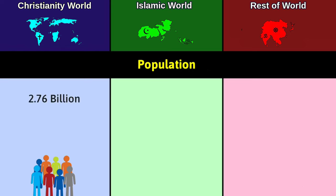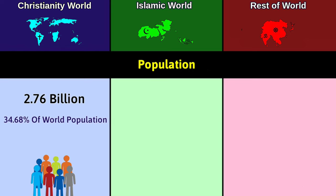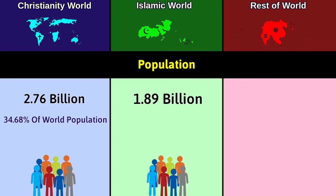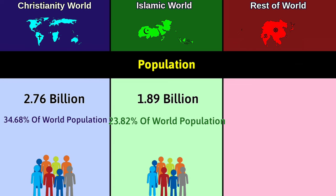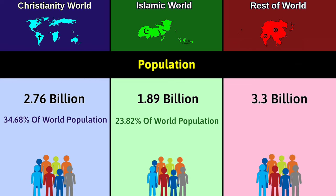Population: Christianity world has 2.76 billion people, representing 34.68% of world population. Islamic world has 1.89 billion, representing 23.82% of world population. Rest of world has 3.3 billion, representing 41.5% of world population.